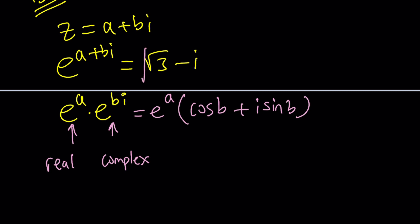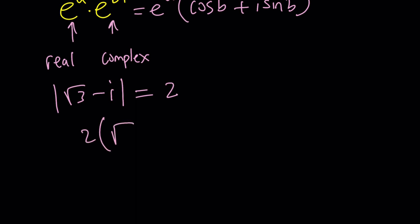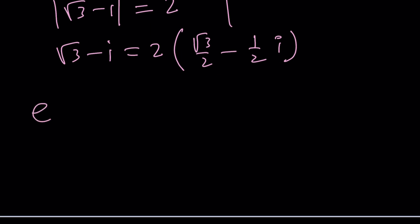Now let's go ahead and focus on this. How do we write this in exponential form? Think about the modulus, the absolute value, which is two. So take out a two. Now we want to set it equal to this. So let's go ahead and put those together. E to the A cosine of B plus i sine of B equals two times root three over two minus one half of i.